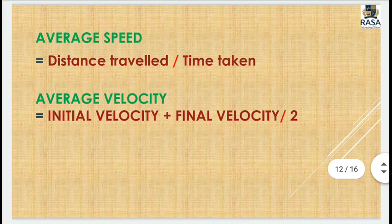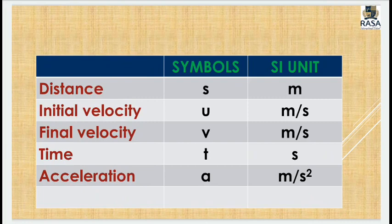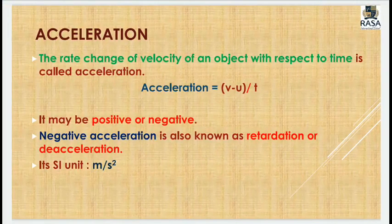Initial velocity (u) is the velocity at which you start your motion. Final velocity (v) is the velocity at any later time interval you choose as the final point. The symbols used are: u for initial velocity, v for final velocity, t for time, and a for acceleration. Their SI units are: distance in meters, initial and final velocity in meter per second, time in seconds, and acceleration in meter per second squared. Acceleration is the rate of change of velocity with respect to time, calculated as (v − u) / t.